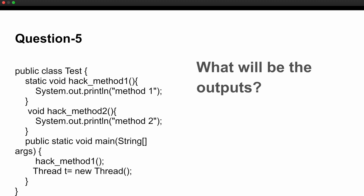The fifth question gave a code snippet where you have to determine the output. A class called Test has two methods: method one, which is a static method, and method two, which is a non-static method. In the main class, method one is called multiple times and then a new thread object is created. You have to determine whether the code executes properly, what gets printed from method one, and what happens overall. These were the five questions asked in the coding round.